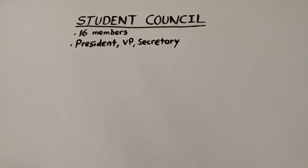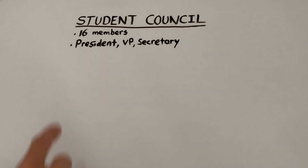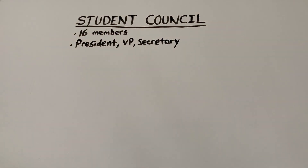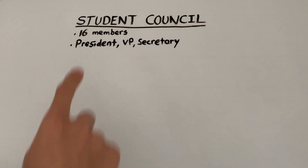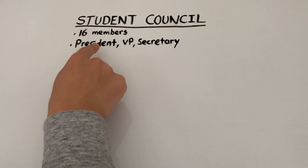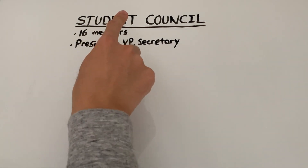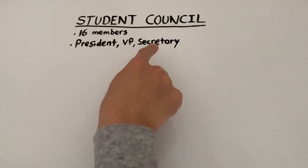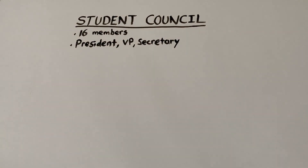It's election time at our school. Our student council has 16 members, and from these 16 members they want to select a president, a vice president, and a secretary. So how many ways can this be done?